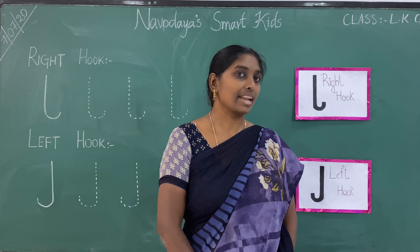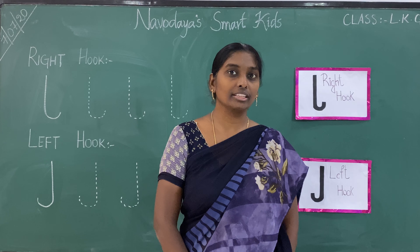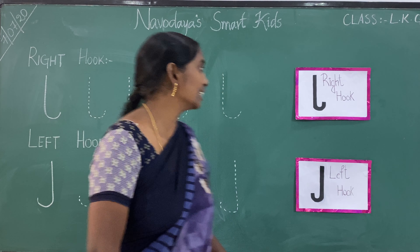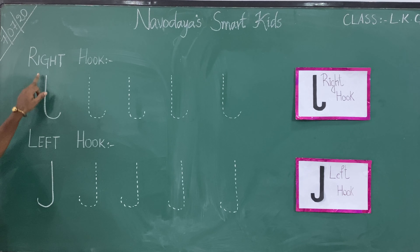The 9th one stroke is right hook. All of you look at the board children. See here. This is right hook.